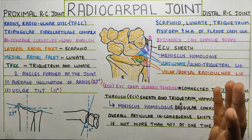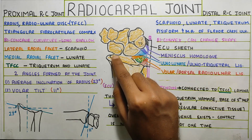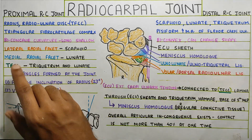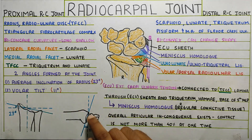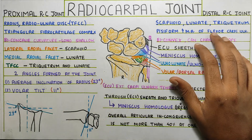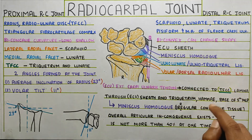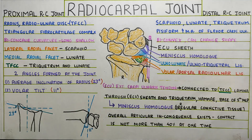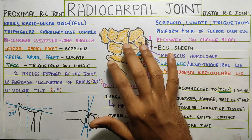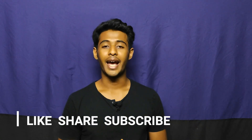To quickly summarize: the ulna does not articulate directly — instead there is the TFCC. The radius has two facets — the medial and lateral — which articulate with the lunate and scaphoid respectively. We saw the angles: average inclination of the radius around 23 degrees and volar tilt of around 11 degrees. In the distal part, the scaphoid, lunate, triquetrum, and pisiform articulate, and the TFCC is connected to all the other ligaments, forming the complex irregular connective tissue called the meniscus homolog. That's all for today — if you like my content, please like, share, and subscribe to the channel. Thank you for watching.